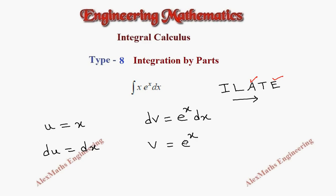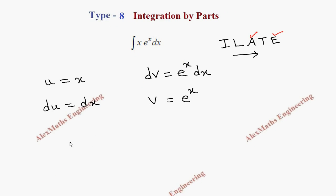So the formula for integration by parts: integral u dv equals uv minus integral v du.